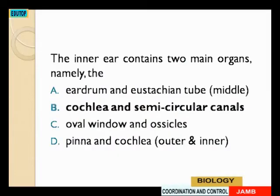Option D is ruled out because the question says inner ear — pinna is not part of the inner ear. Option C is also eliminated because the utricle is not in the inner ear. Cochlea and semicircular canals are in the inner ear. The cochlea is the snail-like structure responsible for hearing, and the semicircular canals are responsible for balance. So our answer is B.